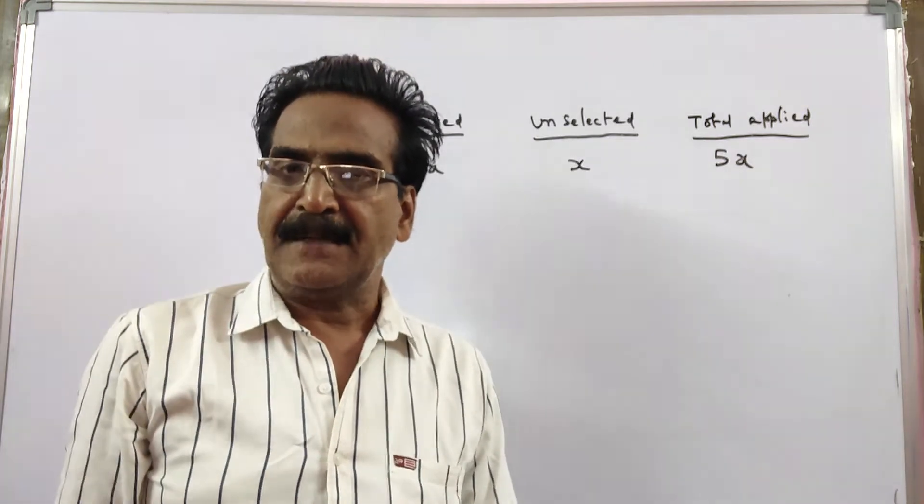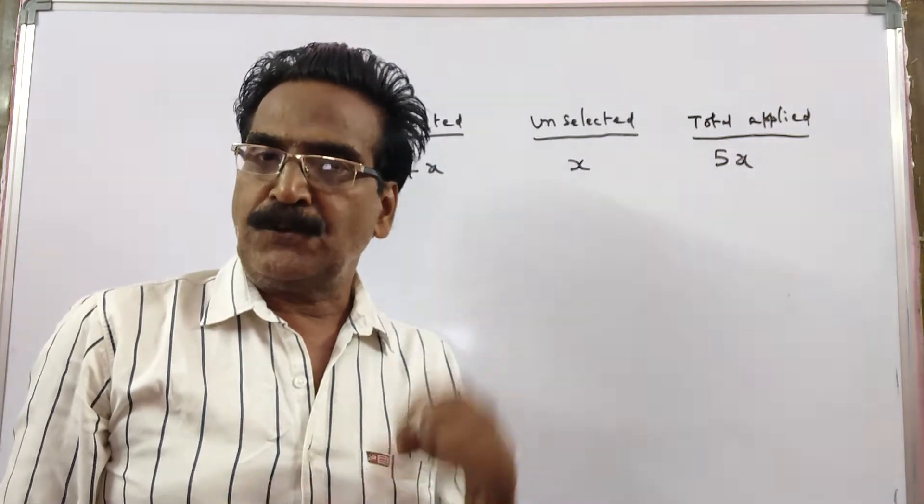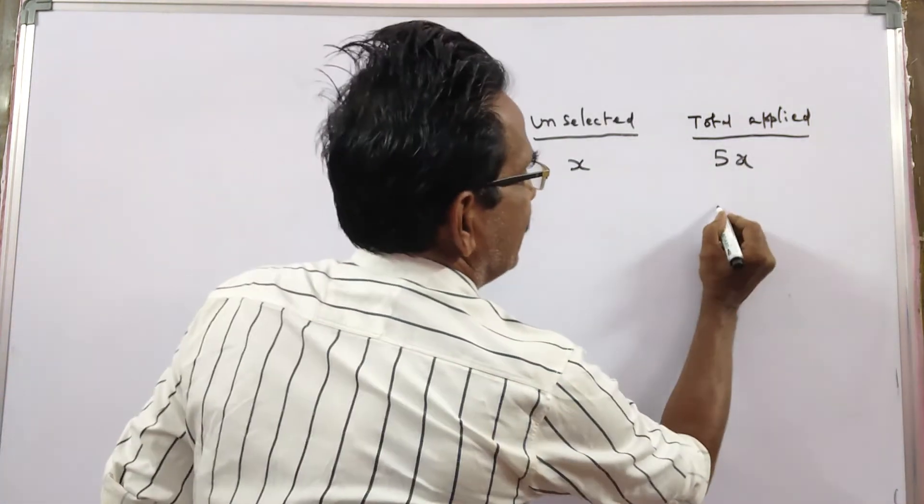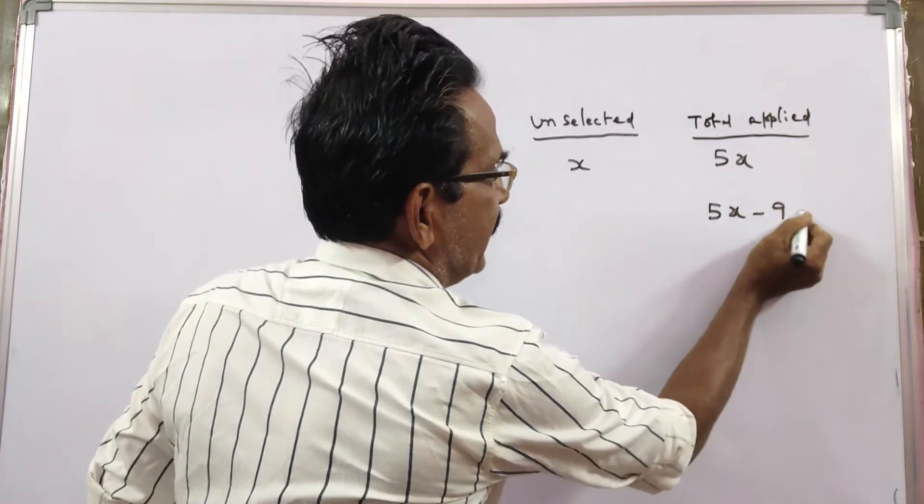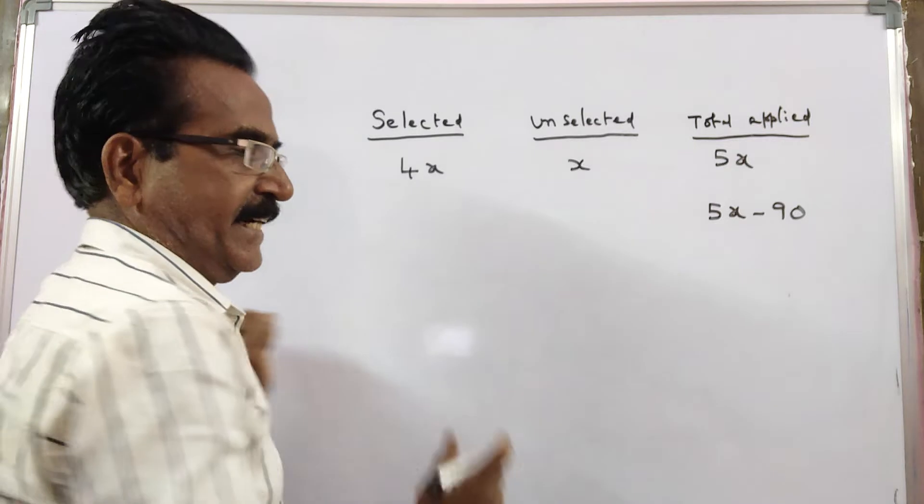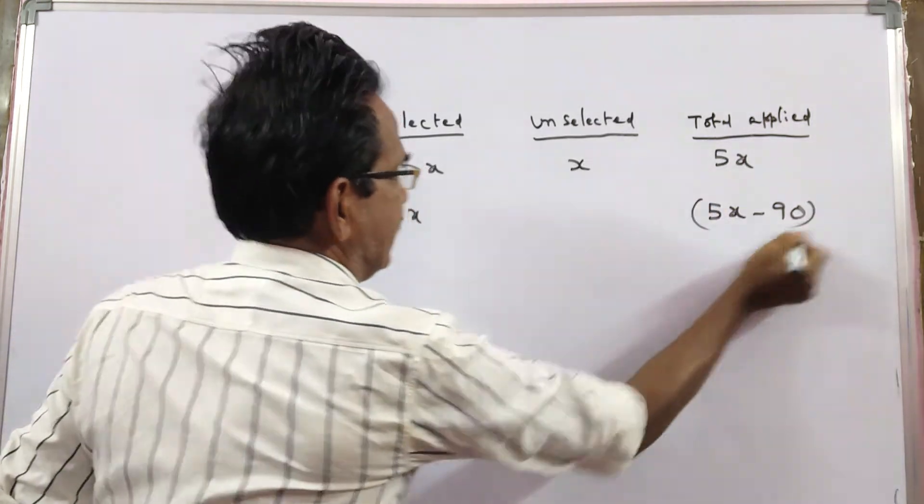This is the first statement. And the second statement is, if the number of students applied had 90 less, that is 5x minus 90, and 20 less were selected.